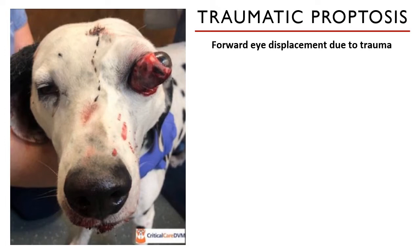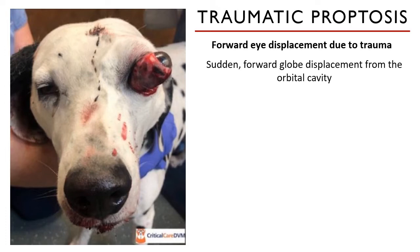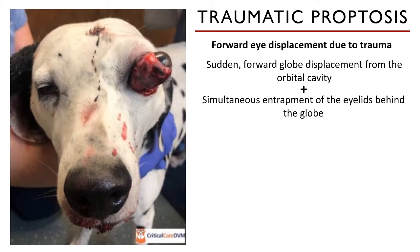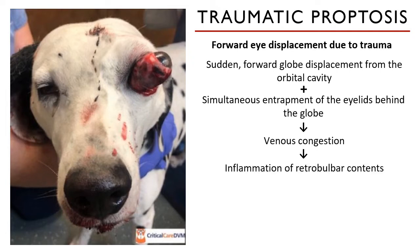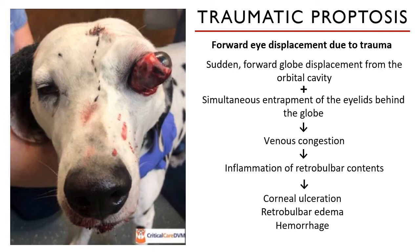or falling from a height and hitting their head. This force can cause a sudden forward globe displacement from the orbital cavity — remember the term 'globe' also means the eyeball. This displacement happens simultaneously with the entrapment of the eyelids behind the globe, causing venous congestion on the surrounding areas of the affected eye, eventually leading to inflammation of the retrobulbar contents. The effects can range from corneal ulceration, retrobulbar edema, hemorrhage, and of course blindness.